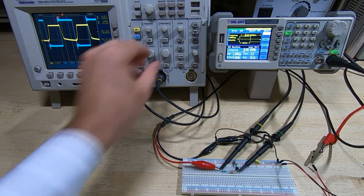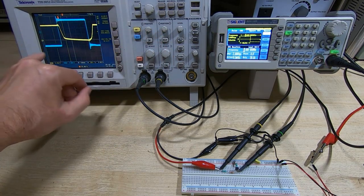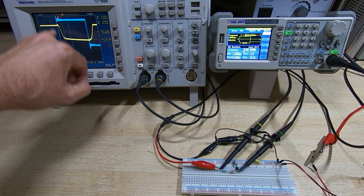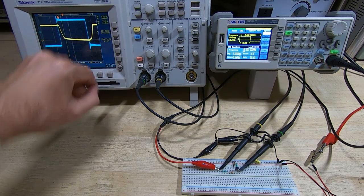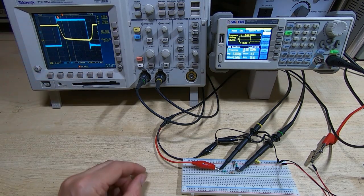What you can see starting to happen now is there's actually a delay between the blue switching edge and when the yellow edge starts to switch. You can kind of ignore the slope - that's really a function of the load resistor.